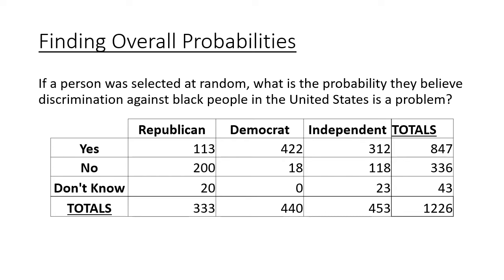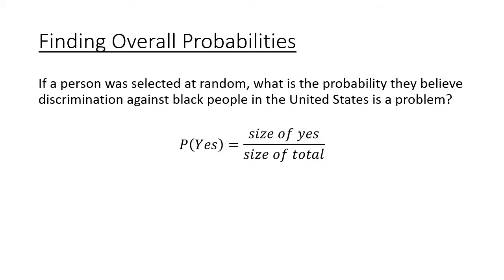The first question: if a person is selected at random, what is the probability that they believe discrimination against black people in the United States is a problem? The key word is random — I don't know if they're Republican, Democrat, or Independent. I just want to know who answered yes. From the table, the total number of people who said yes was 847, and the total number of people asked was 1226. So the probability is 847 divided by 1226, which is approximately 0.691.